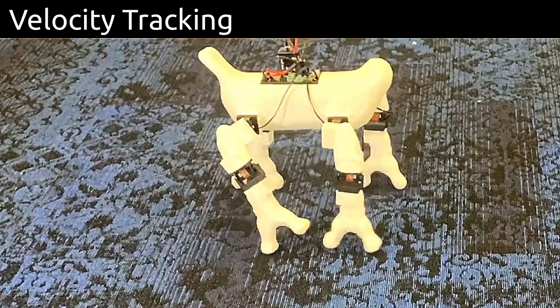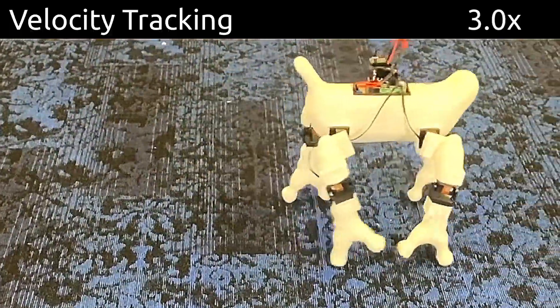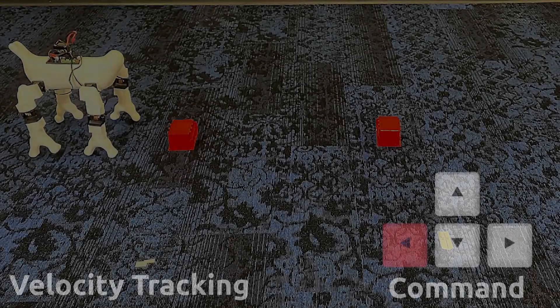The velocity-optimized robot takes smaller steps, tracking velocity more accurately but sacrificing movement range, while the energy-optimized bot takes larger strides, resulting in less consistent speed.